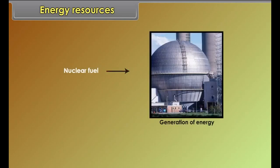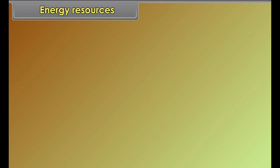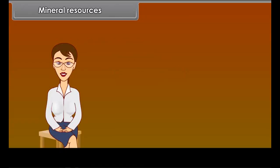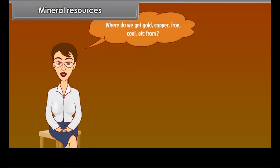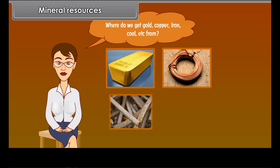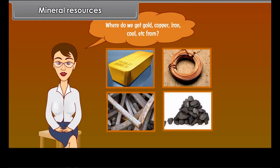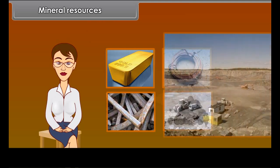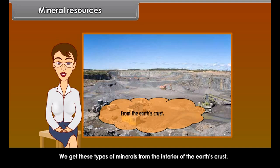Resources which are used for generating power or energy are known as energy resources. Some energy resources through which we can generate power include coal, natural gas, petroleum, nuclear fuel, wind, and running water.